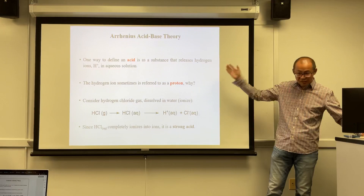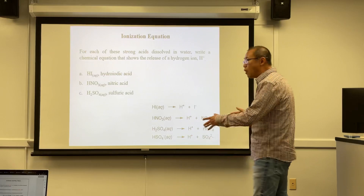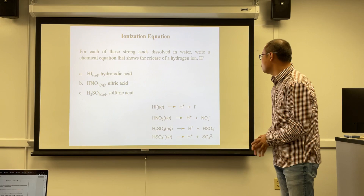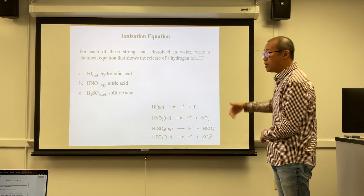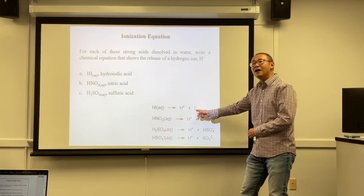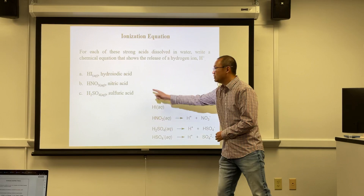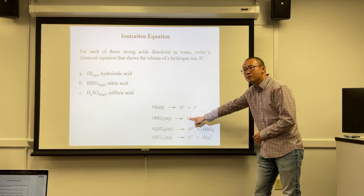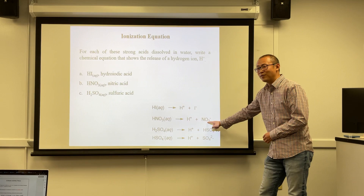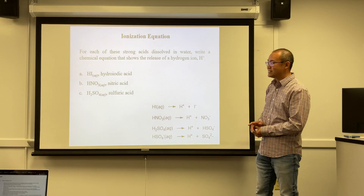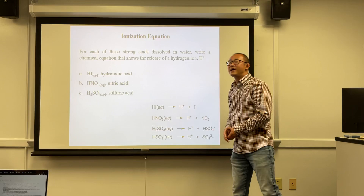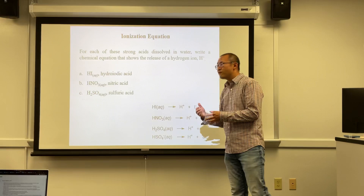Here are some practice problems: write ionization equations for three acids. HI is similar to HCl — it becomes a proton and iodide (I−). Nitric acid (HNO3) ionizes into a proton and nitrate (NO3−). Sulfuric acid (H2SO4) is unique — it has two ionizable hydrogens.